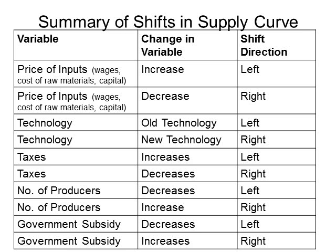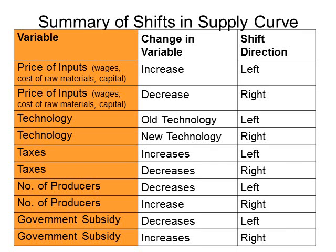Here is a table that summarizes the things that impact the shifting of the supply curve. You may want to pause and copy down the contents of this slide. The first column lists those things: prices of goods and services that firms purchase to make products, the level of technology used by a firm or industry, taxation policies of national, state, and local governments, and the number of producers.